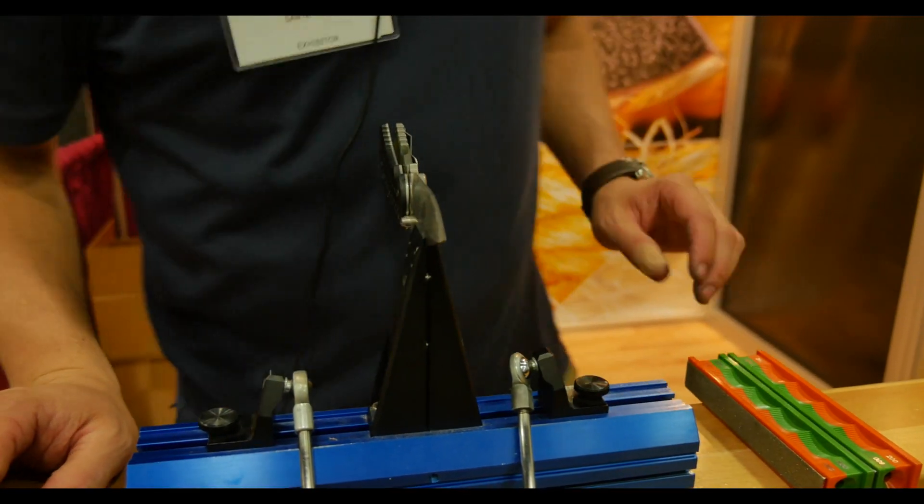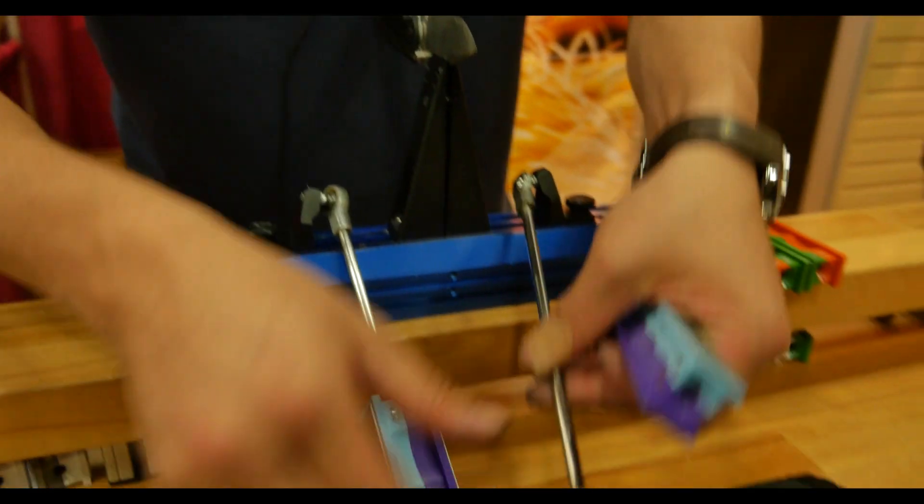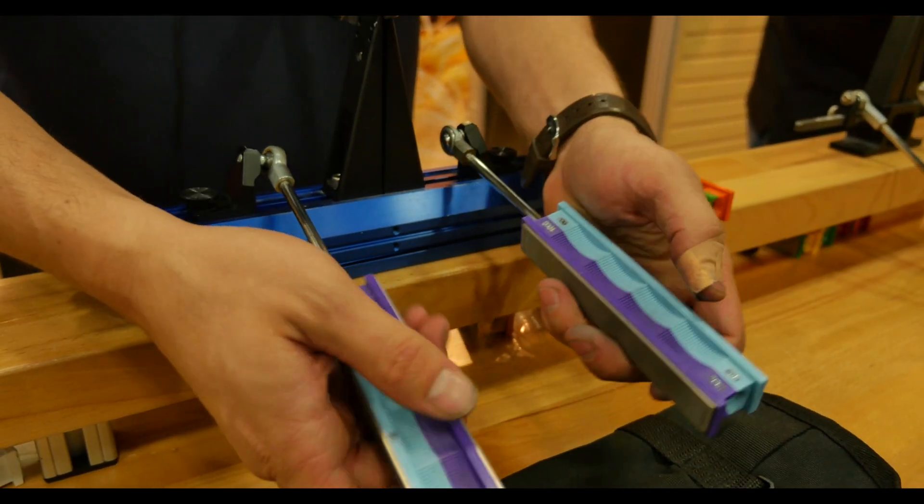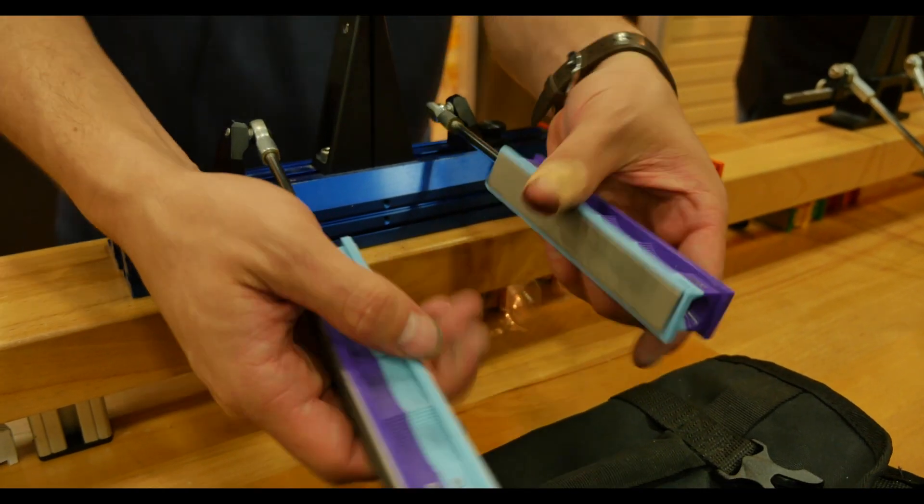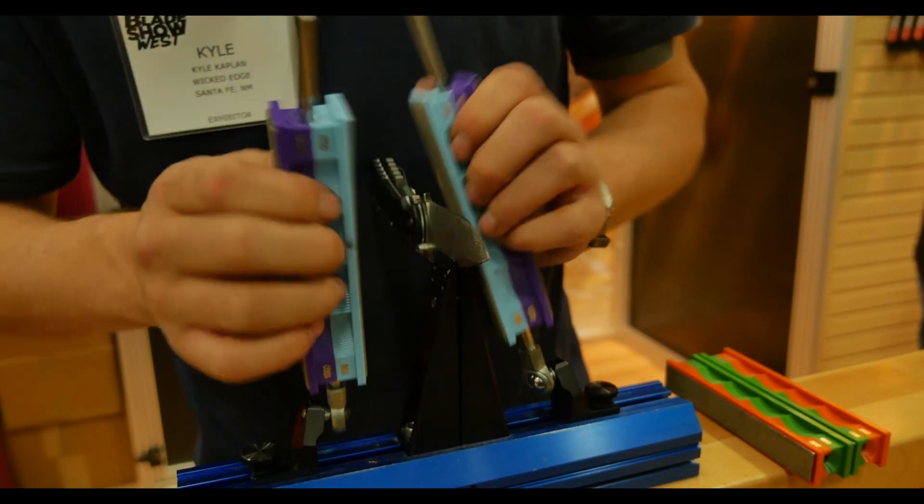So once I finish with the 600 grit stone, now I'm going to switch it over to an 800 and 1000 grit stone. These are sold separately. So these are handles with 800 on one side, 1000 grit on the other. Again they're diamond. And I just continue sharpening as I was before.